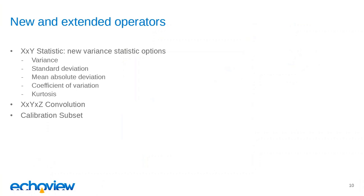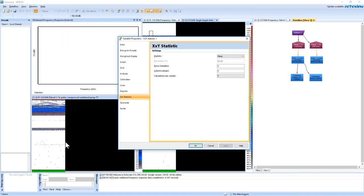These statistics give you greater flexibility in data manipulation and enable more advanced digital image processing techniques. Similarly, the x by y by z convolution operator can be used for image processing when working with multi-beam data. A new operator in EchoView 9 is the calibration subset, which works for both single beam and multi-beam data types, and essentially allows you to partition your data based on the calibration files' calibration values recorded in the file.